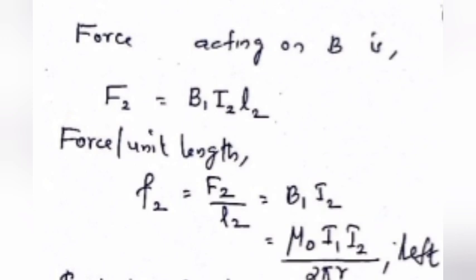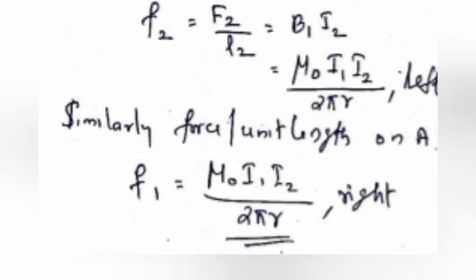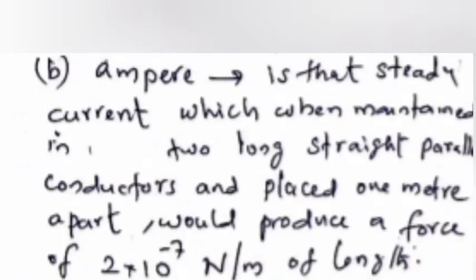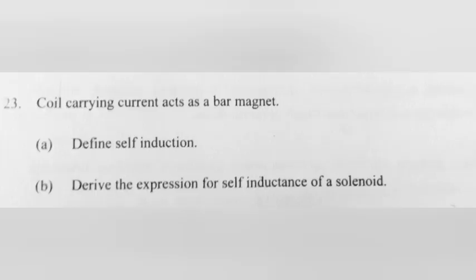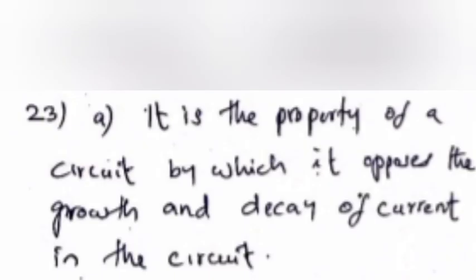Similarly, force per unit length on conductor A: F1/L1 = μ₀I1I2 / 2πr (to the right). Define Ampere: One ampere is that steady current which, when maintained in two long straight parallel conductors placed one meter apart, produces a force of 2×10⁻⁷ newton per meter of length.